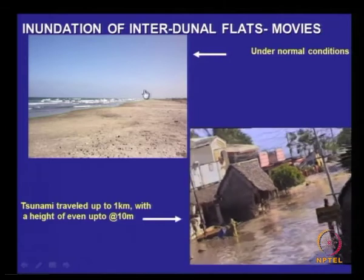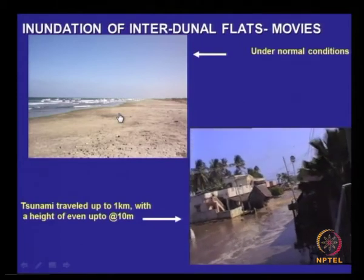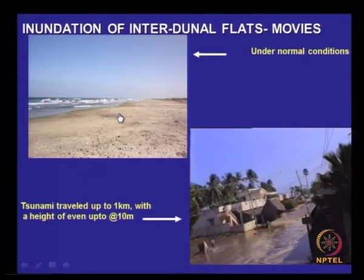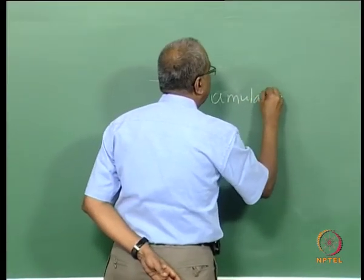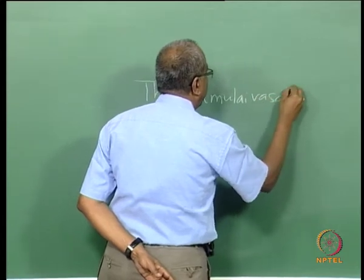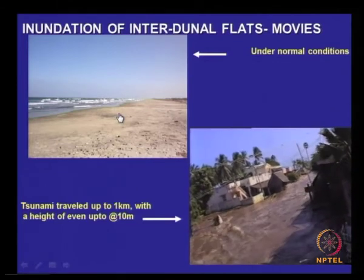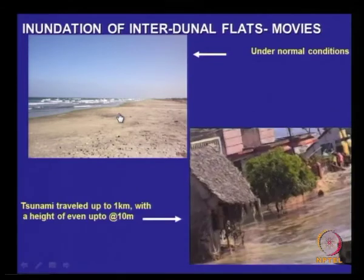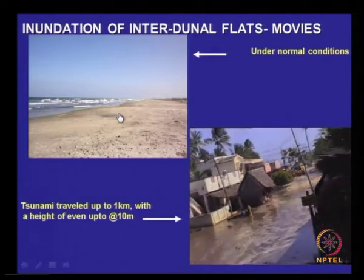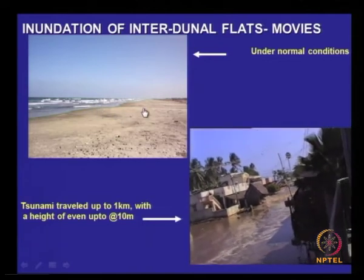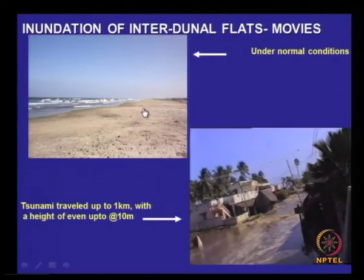This place is called Thirumullai Vassal. Look at the road — there were a lot of casualties here at this location, and nothing like this has ever occurred in history. Because this is a flat beach, flat beaches are very dangerous locations as far as tsunami is concerned. You need to safeguard all these areas.